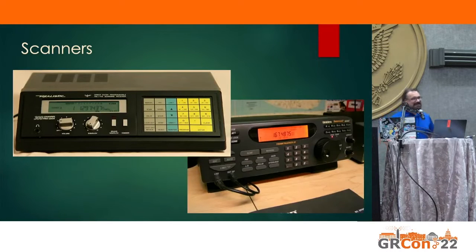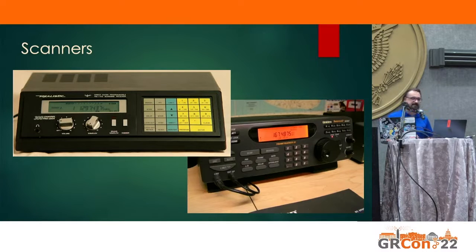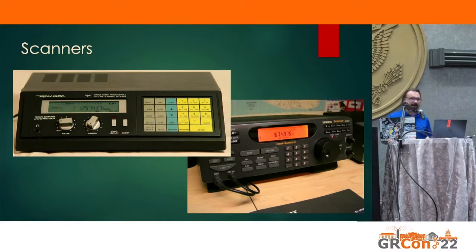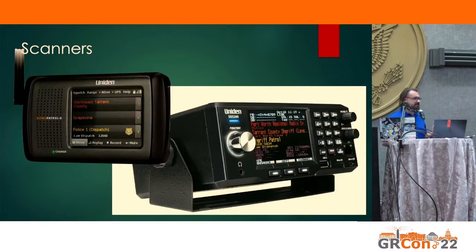Since the 1980s, with microprocessors being ubiquitous and digital synthesizers, scanners became a lot more flexible — now you just punch in the frequency you want to listen to and it does the rest. Around that time, scanners also started adding features for monitoring trunked radio systems, which is described in more depth in one of the presentations linked at the beginning of these slides.